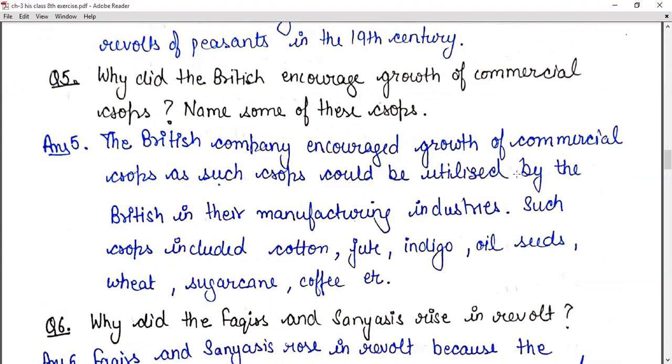Such crops included cotton, jute, indigo, oilseeds, wheat, sugarcane, coffee, etc.